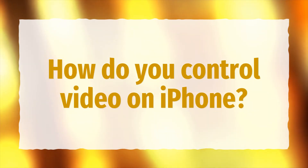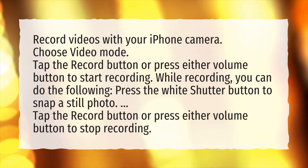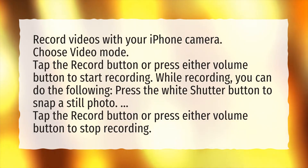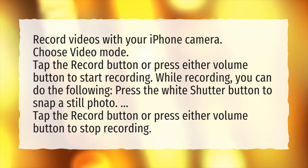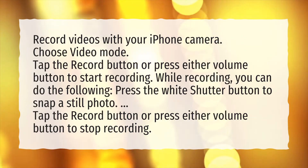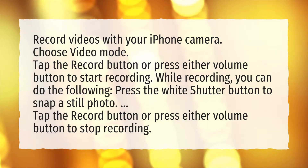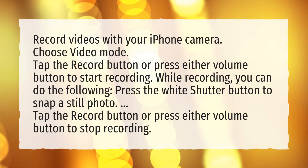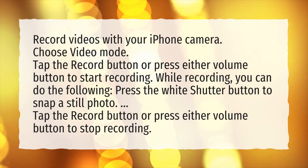How do you control video on iPhone? Record videos with your iPhone camera. Choose video mode. Tap the record button or press either volume button to start recording. While recording, you can press the white shutter button to snap a still photo. Tap the record button or press either volume button to stop recording.